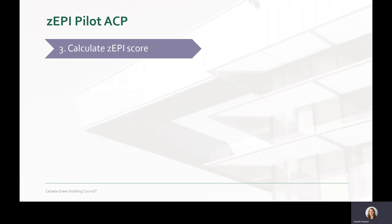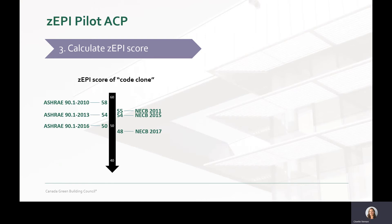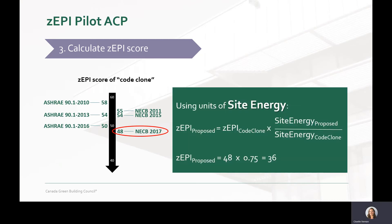Let's look at site energy first. Let's say that you are using NECB version 2017. This means that your starting point is a ZEPI score of 48. If your design uses 75% of the annual energy consumption of the code clone, you then take 75% of 48 and get the ZEPI score using site energy, which works out in this case to a score of 36.